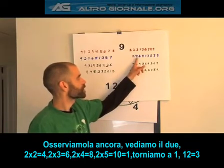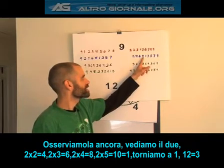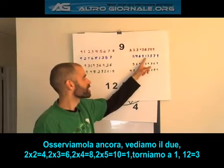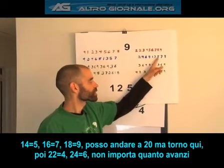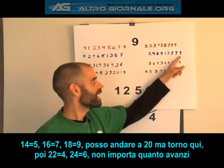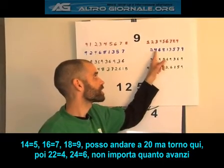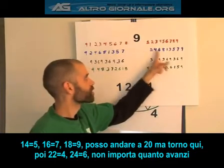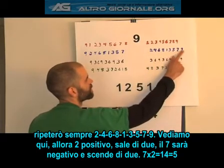2 times 2 is 4, 2 times 3 is 6, 2 times 4 is 8, 2 times 5 is 10 — coming back to 1, since 1 plus 0 is 1 — then 12 which is 3, 14 where 4 plus 1 is 5, 16 where 6 plus 1 is 7, 18 where 8 and 1 is 9. I could go to 20 and beyond — 22 comes back to 4, 24 back to 6 — no matter how far I go, it repeats the same pattern: 2, 4, 6, 8, 1, 3, 5, 7, 9.